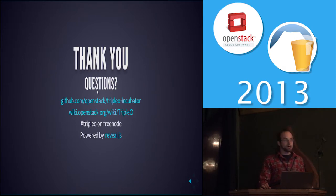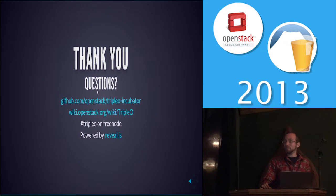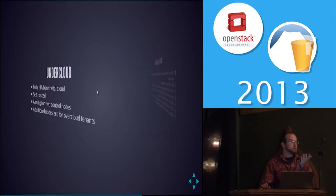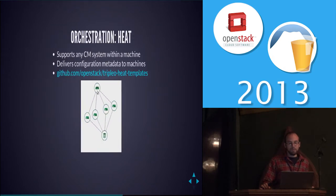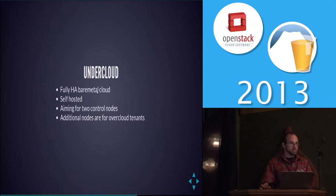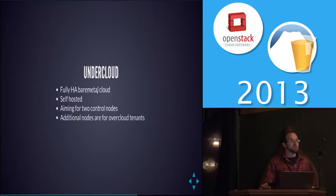Docker containers are one option for the over cloud. There are caveats: you can't run different kernels in Docker. If you want to run high-performance things like Trove or database services, you could actually swap out the KVM over cloud for a Docker over cloud. The speaker thinks they've tried LXC on top rather than Docker specifically.